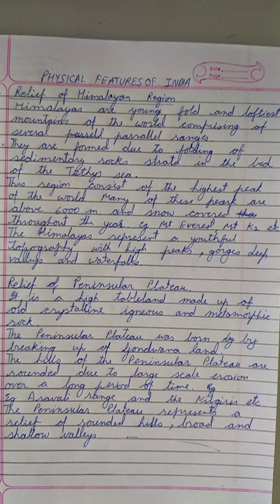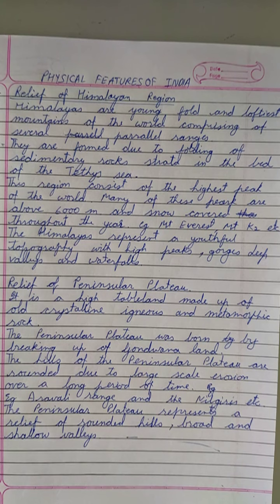Rivers like Godavari, Krishna, Kaveri, and Mahanadi flow from west towards east. We have two rivers — Narmada and Tapi — that flow from the central part of India in an east-to-west direction and fall into the Arabian Sea near Gujarat. The rest of the rivers fall in the Bay of Bengal. Rivers that fall in the Bay of Bengal form deltas, while those that fall in the Arabian Sea form estuaries.